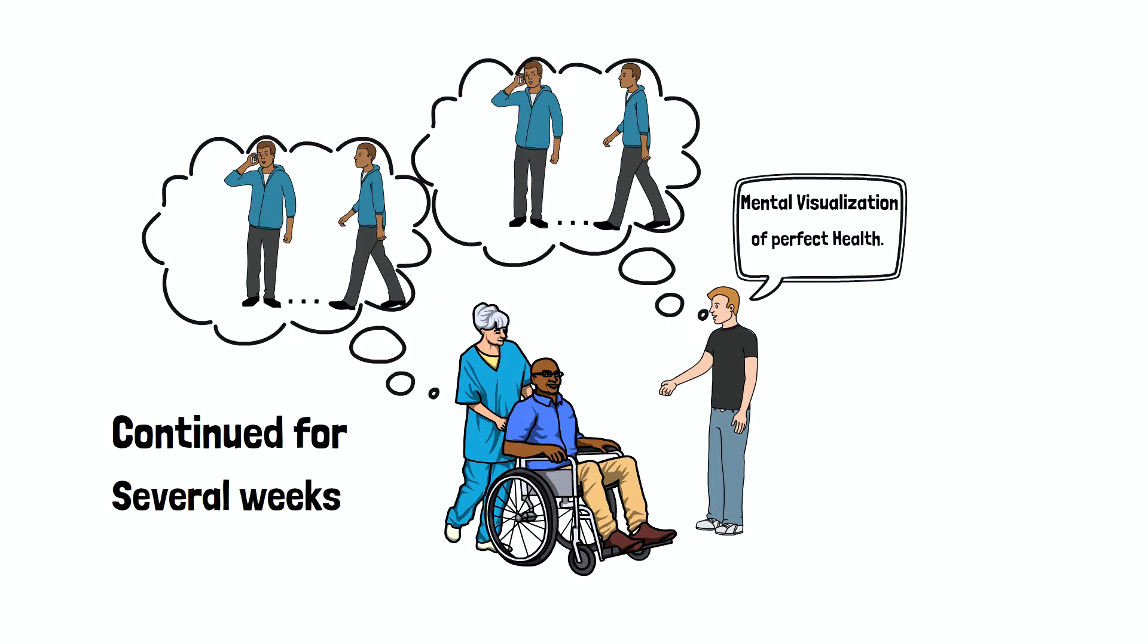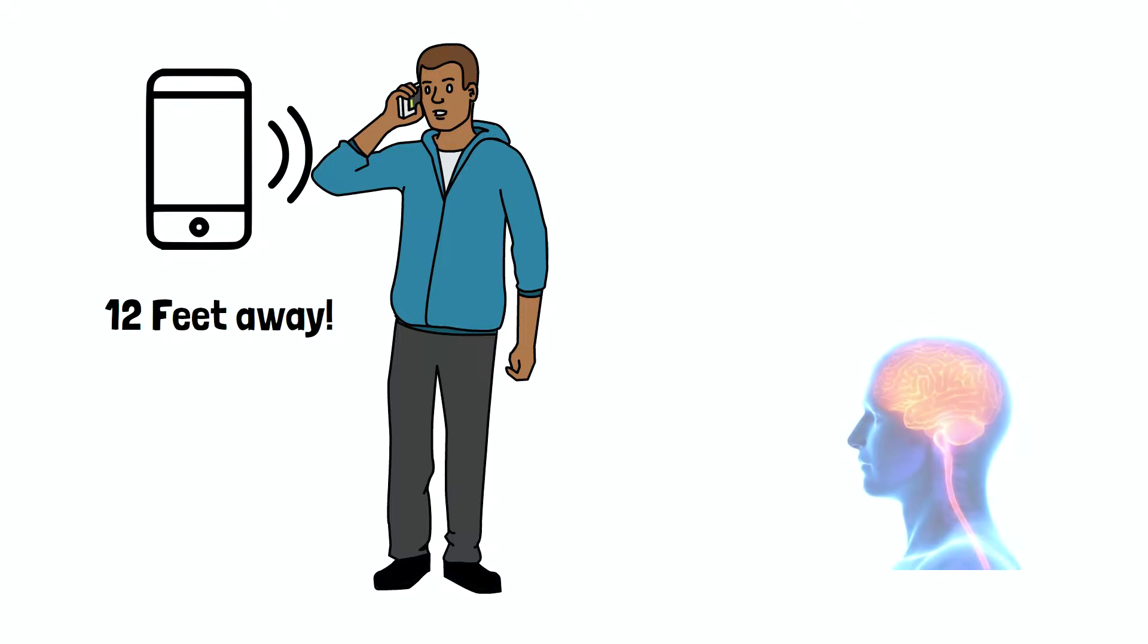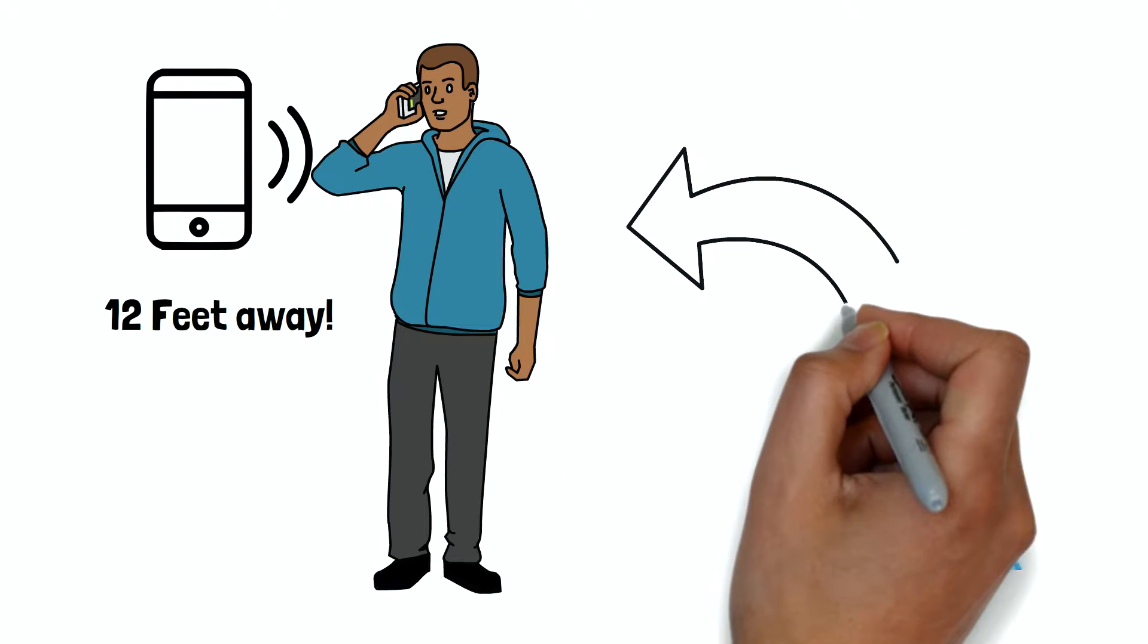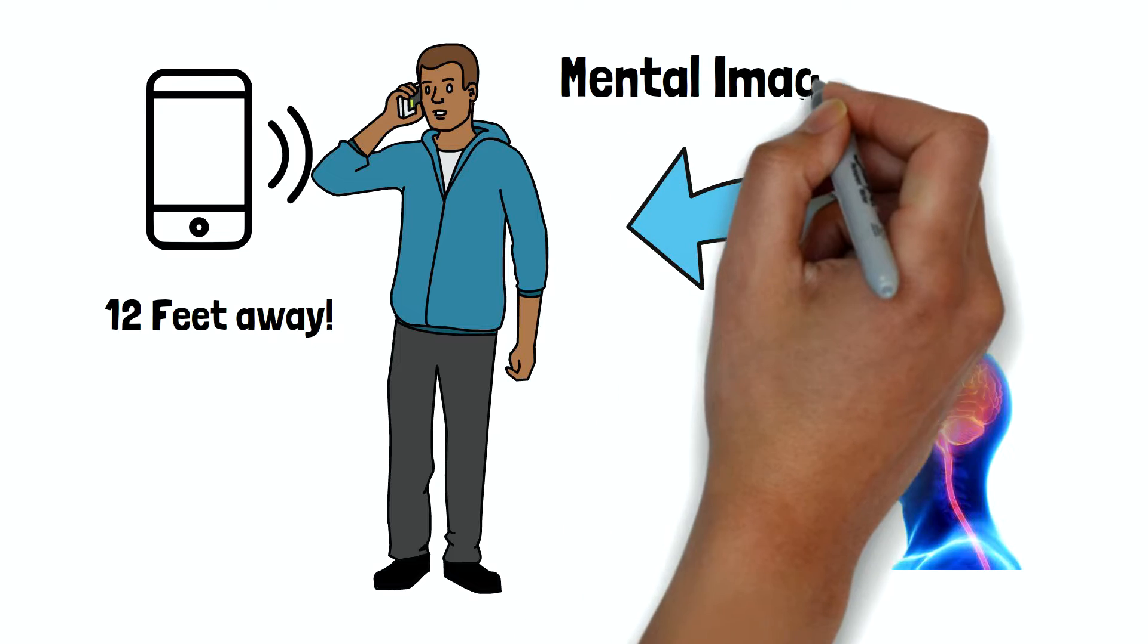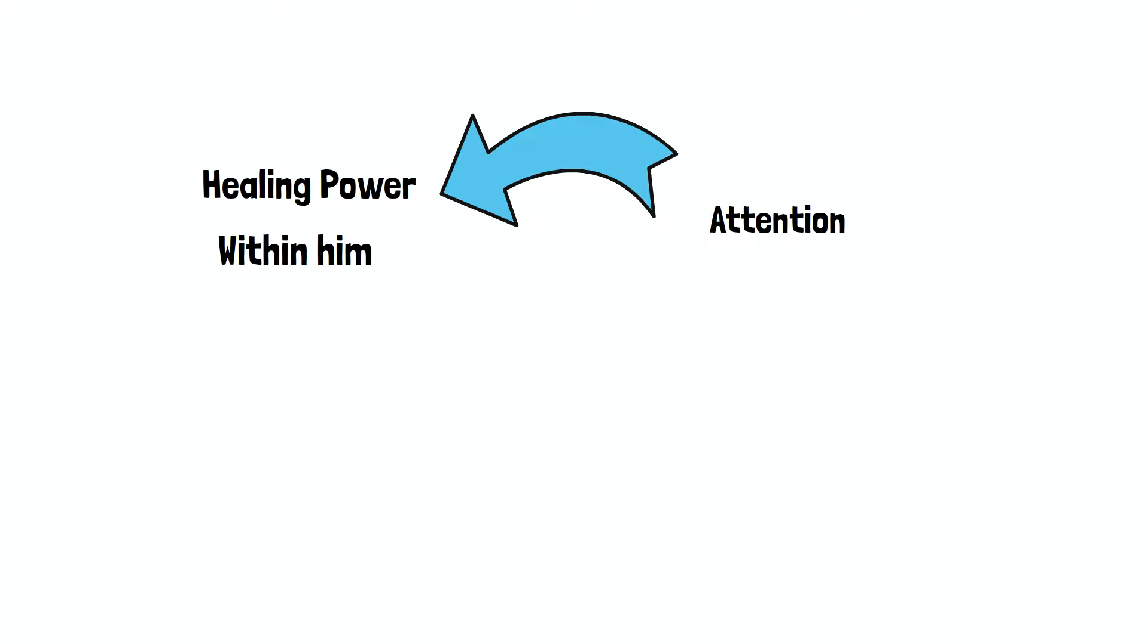Then one day, when nobody was at home, the telephone rang. The telephone was 12 feet away from his bed. Nevertheless, he managed to answer it. His paralysis vanished from that hour on. The subconscious mind responded to his mental images. When he shifted his attention to his healing power within himself, power flowed through his focused attention and he could walk again.